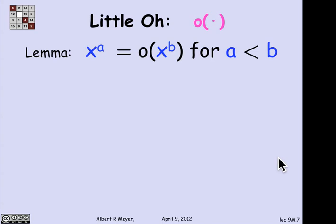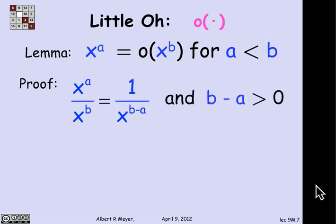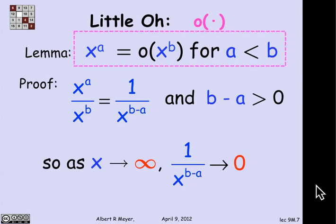The proof follows almost immediately from the definitions because to prove that x to the a is little o of x to the b, we want to look at the quotient of x to the a over x to the b. But of course, the quotient of x to the a over x to the b is equal to 1 over x to the b minus a. And since a is less than b, b minus a is positive. So that means that as x approaches infinity, the denominator is x to a positive power also goes to infinity, and therefore 1 over x to that positive power goes to 0, which is the definition of x to the a being little o of x to the b.